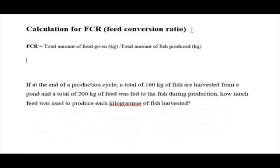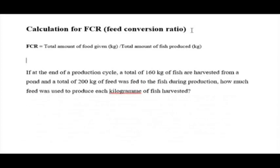Let's take an example. At the end of the production cycle, a total of 160 kg of fish are harvested from a pond, and a total of 200 kg of feed was used during the production cycle. So, how much feed was used to produce each kg of fish? You want to know how much you have spent to get one kg of fish and how much the cost per kg is in your hands.